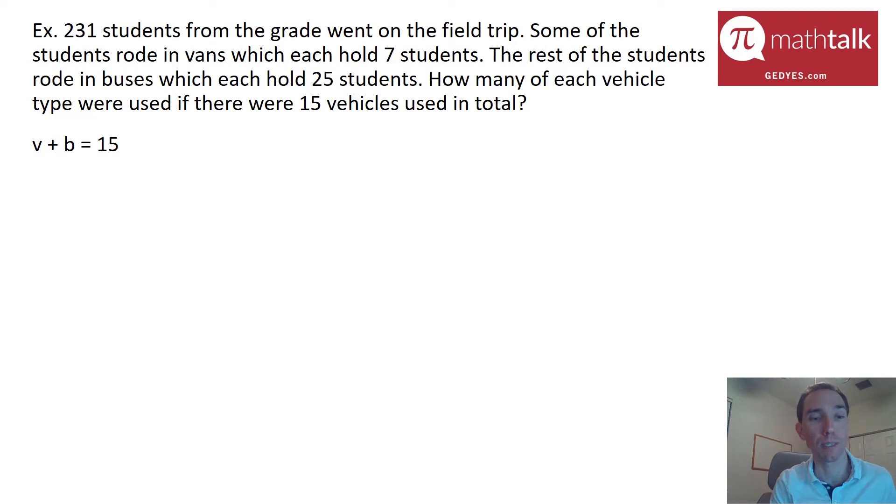So let's look at equations we can use to set up to help solve this. If you look at vans and buses, the total number they told us is 15. If you look at students, the total number is 231, but it's based on how many can fit in vans and how many can fit in buses. So since 7 fit in each van and 25 fit in each bus, I'm going to use that as coefficients for the vans and buses. And when I incorporate that, I have a total of 231 students.